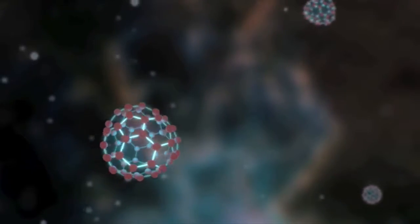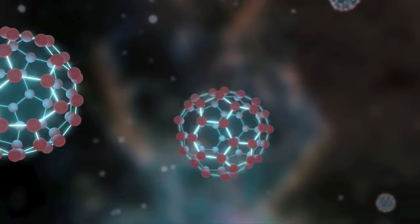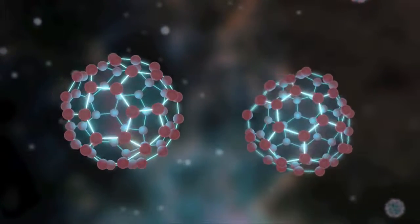We can detect Buckyballs in space through their vibrational motions. These Buckyballs oscillate or vibrate in very different ways, and each way they vibrate corresponds to a very specific color of infrared light that they emit or absorb.